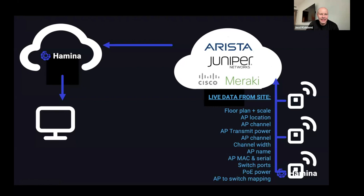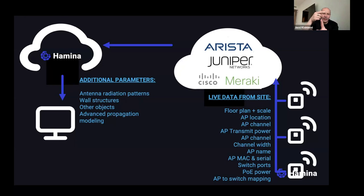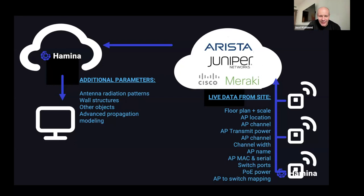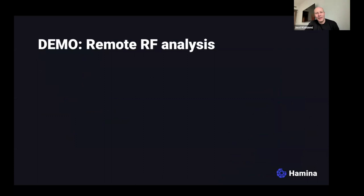Using vendor APIs, all live data from a live site can be extracted in a fraction of a second — a boatload of data — then visualized in Hamina with heat maps, antenna radiation patterns, wall structure information, and object information overlaid on your screen.